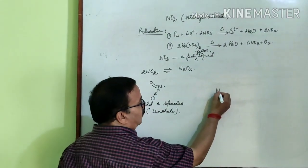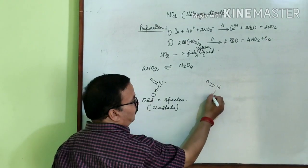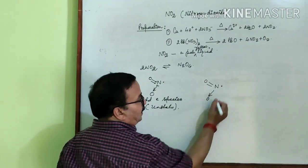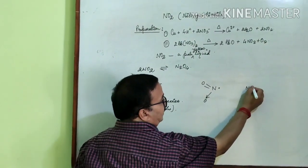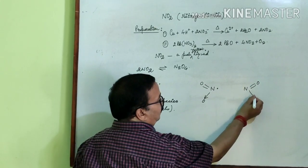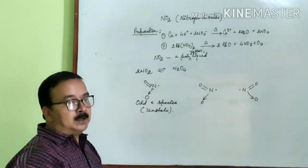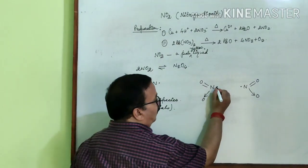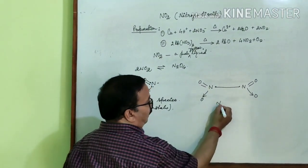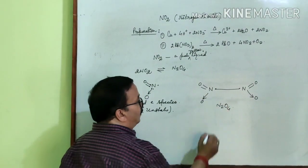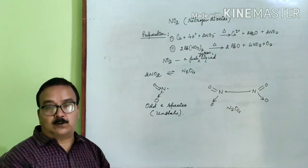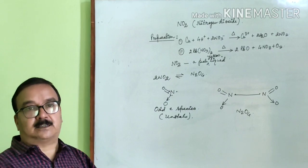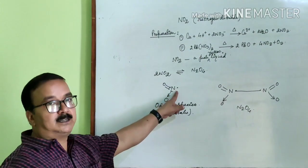So these are the two molecules of NO2. Here one unpaired electron is there. This one is the second molecule of NO2, an unpaired electron is there. Now these two unpaired electrons make a bond and N2O4 is formed. Therefore we can say that NO2 in the gaseous state is paramagnetic in nature.